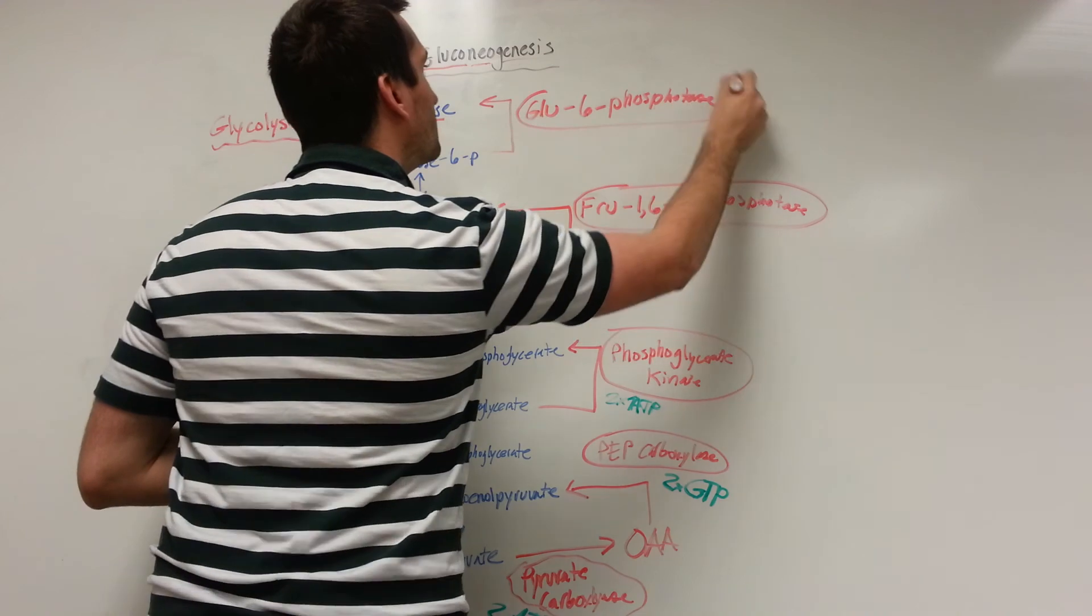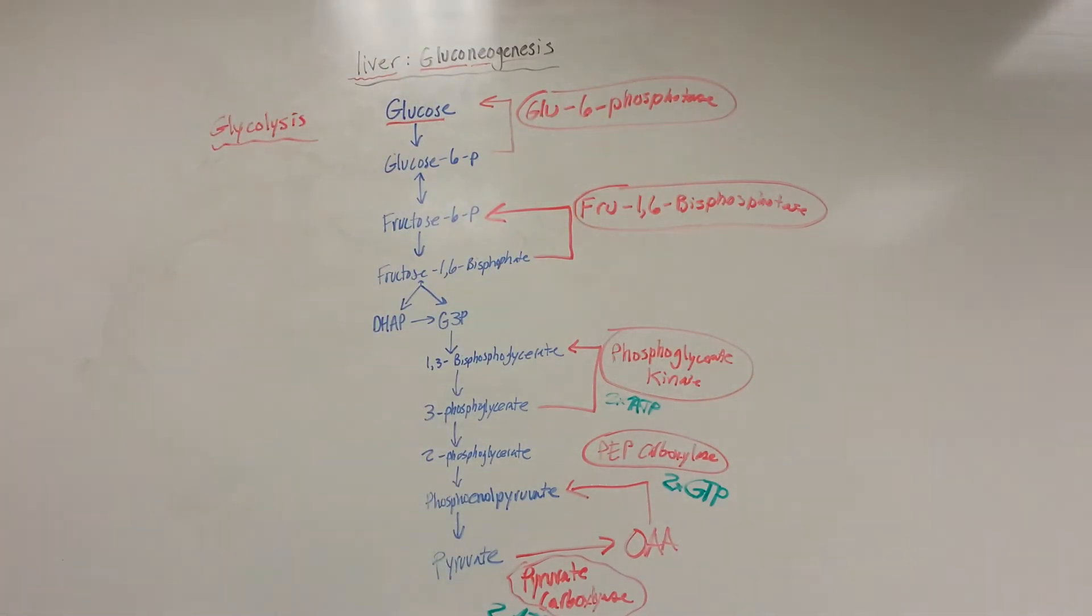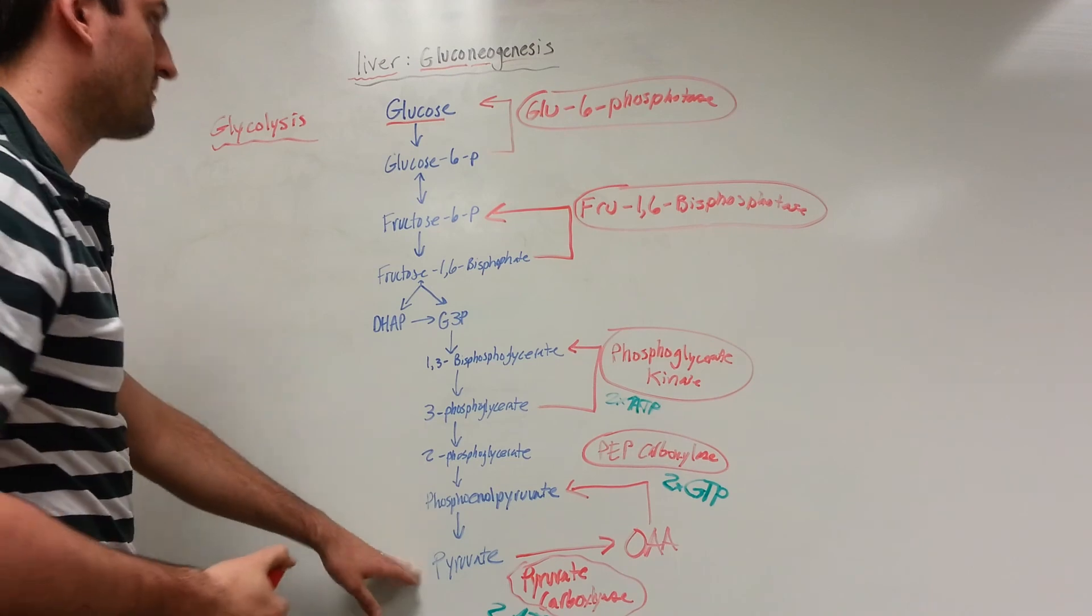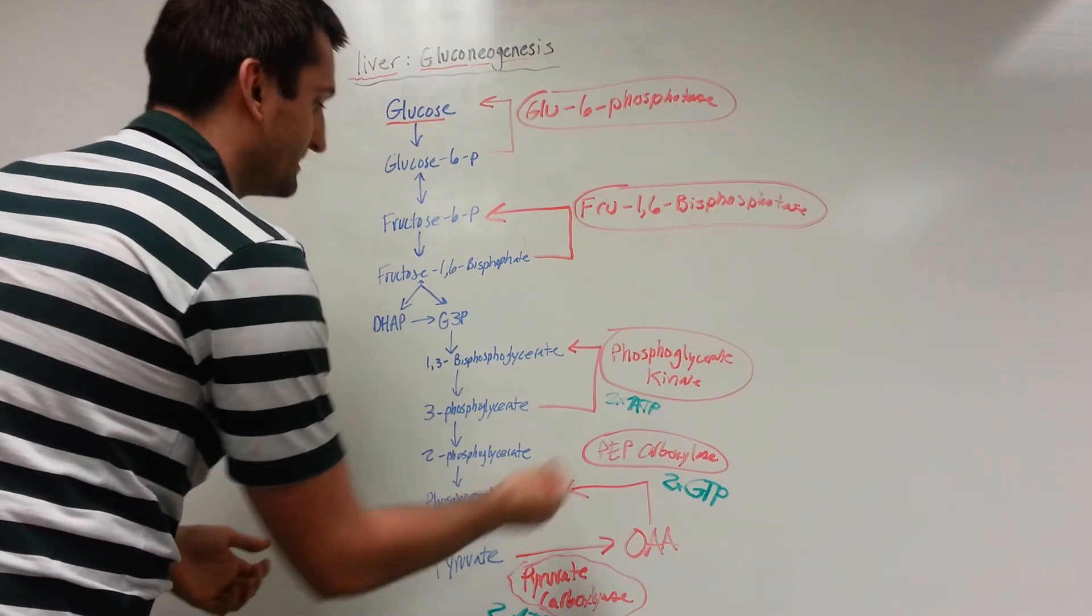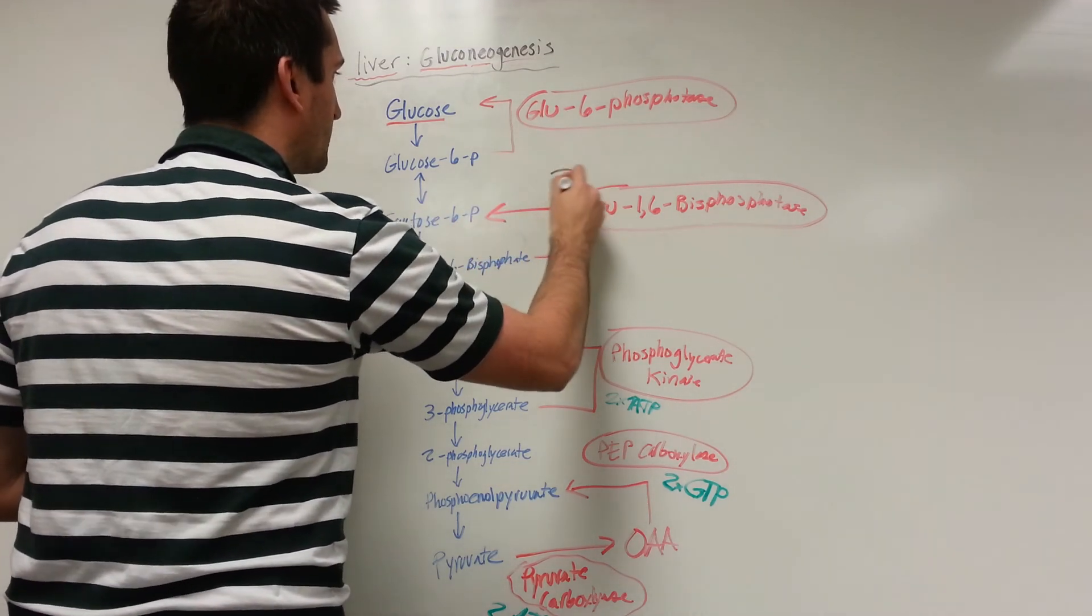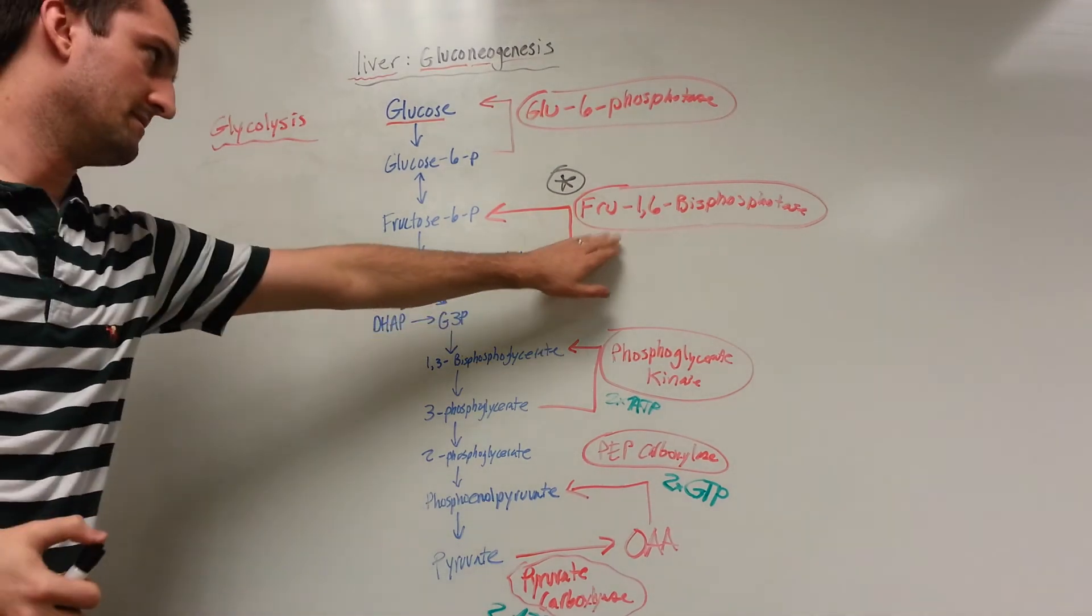So this is the basic concept of gluconeogenesis. It is worth noting that we have a rate-limiting step here. We have one, two, three, four, five different reactions that are required to convert the pyruvate back into glucose. We're going to invest six ATP total. But how do we regulate? What is the rate-limiting step for gluconeogenesis? That's going to be the fructose 1,6-bisphosphatase reaction.